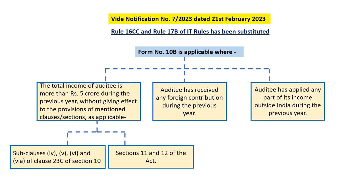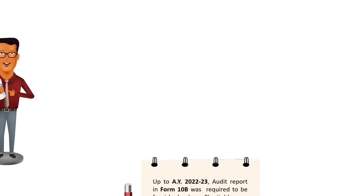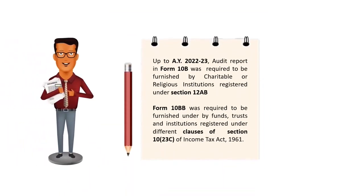Form 10B is also applicable if the auditee has received any foreign contribution during the previous year, or if the auditee has applied any part of its income outside India during the previous year. If any of the above three conditions is fulfilled, Form 10B shall be applicable; otherwise, Form 10BB shall be applicable. However, up to Assessment Year 2022-23,